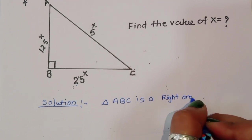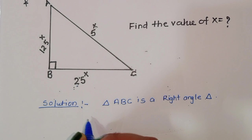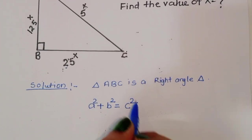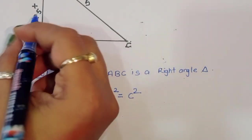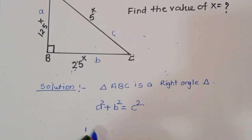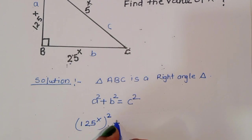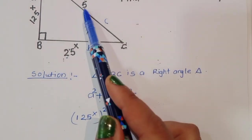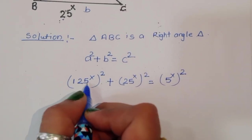According to the Pythagorean theorem, the formula is a² + b² = c², where a is the base, b is the height, and c is the hypotenuse. So here, a is 125^x, b is 25^x, and c is 5^x. Therefore: (125^x)² + (25^x)² = (5^x)².